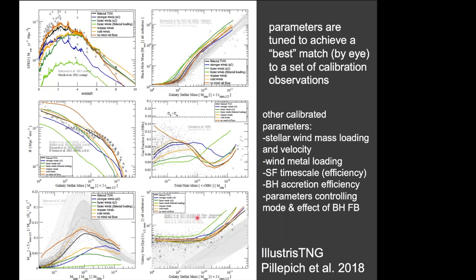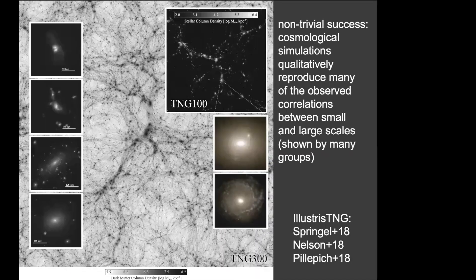A simple example is what was implemented in the original Illustris simulation: wind particle velocity proportional to the dark matter halo velocity dispersion at the virial radius, and mass loading — the mass outflow rate relative to the star formation rate — assumed to be a tunable constant divided by the wind velocity squared. Subsequent generations like IllustrisTNG added dependencies on redshift and metallicity, but the basic philosophy is the same. Parameters are then varied and calibration quantities like the stellar mass function — the number per cubic megaparsec of galaxies in bins of stellar mass — are examined to select the preferred parameter set.